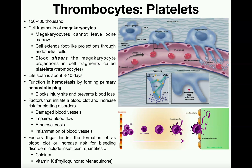So first of all, how many platelets do we have at any given time in the blood? Well, depending on the person and genetic factors, we have anywhere between 150,000 to 400,000 platelets in the blood. And remember what platelets are going to be doing — their function is to promote blood clotting.